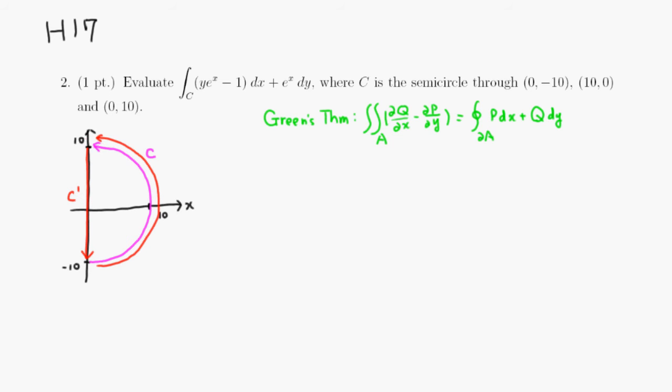So in this case, I'm going to call this region, so this half disk, I'm going to call this region A. Obviously, the boundary of A is going to be C together with C prime.